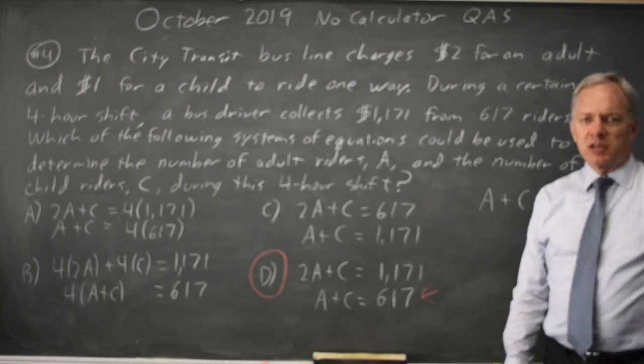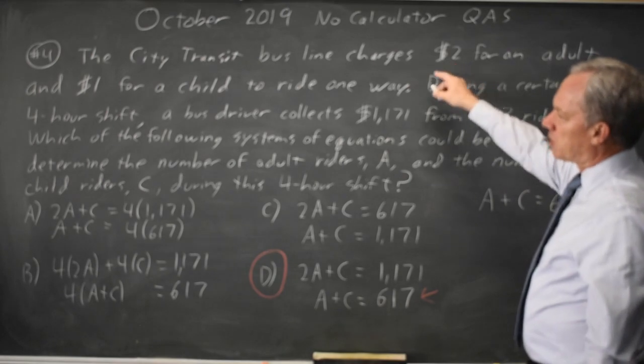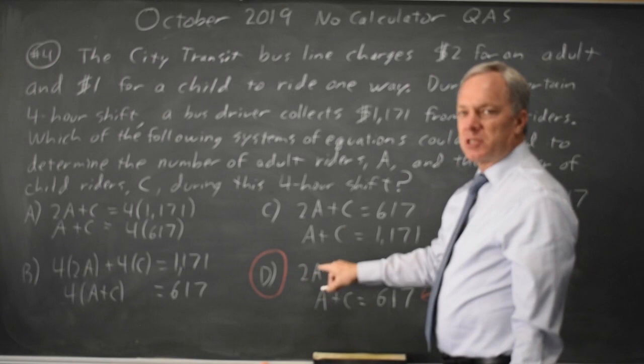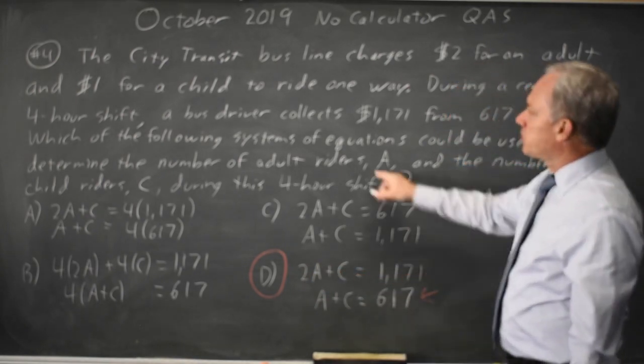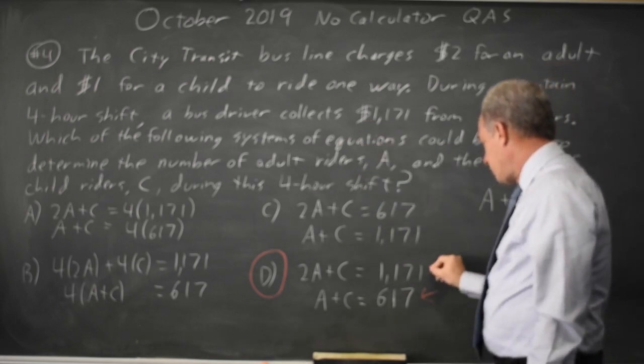Let's try the other half of the equation which is revenue. We collect $2 for each adult and $1 for each child. So that would be twice the number of adults plus the number of children is the total number of dollars, 1171, which matches the amount collected. So that equation also works.